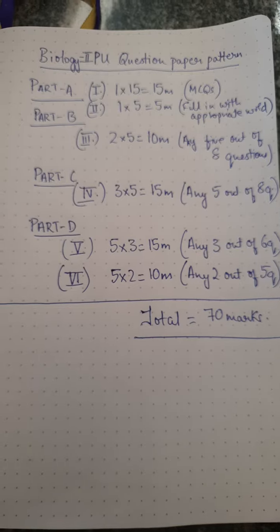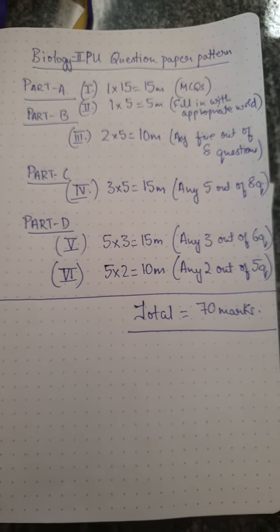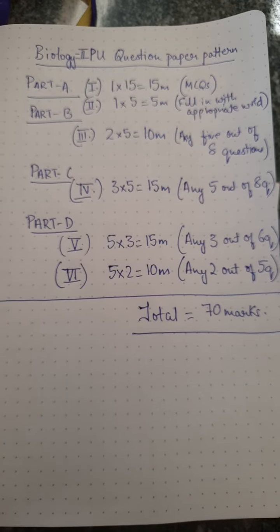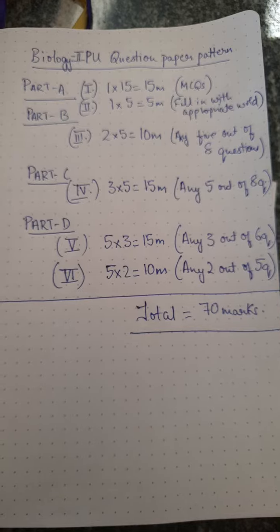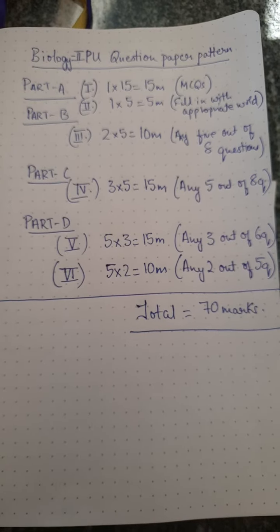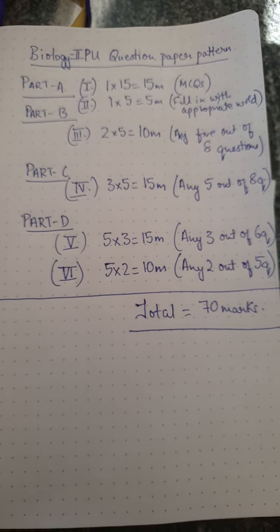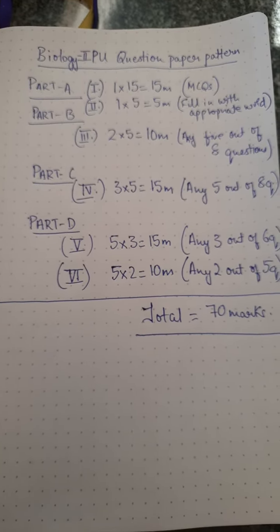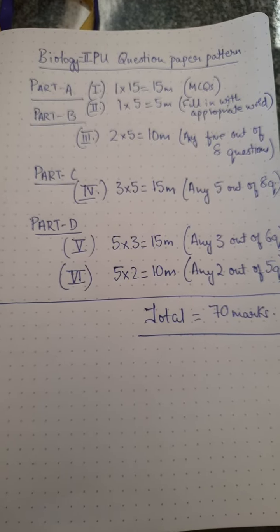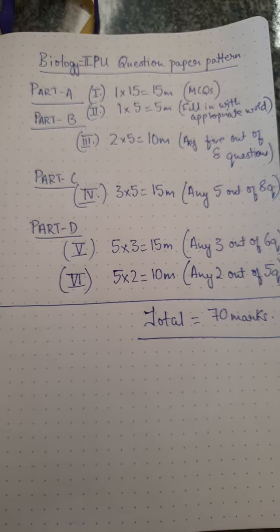1 × 15 = 15 marks. These are all multiple choice questions with no alternatives. Second, Roman numeral II: fill in the blanks with appropriate words. There are five questions equivalent to five marks. So Part A totals 20 marks based on this easy pattern.